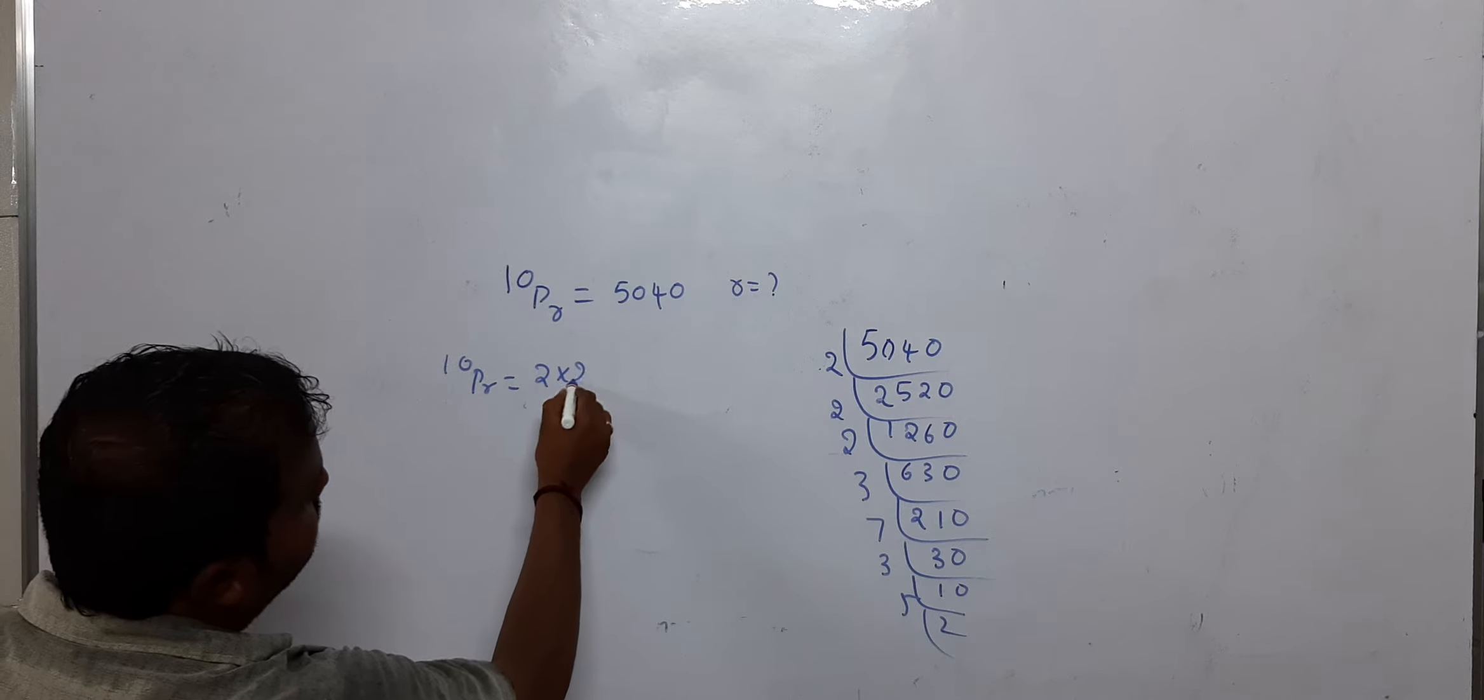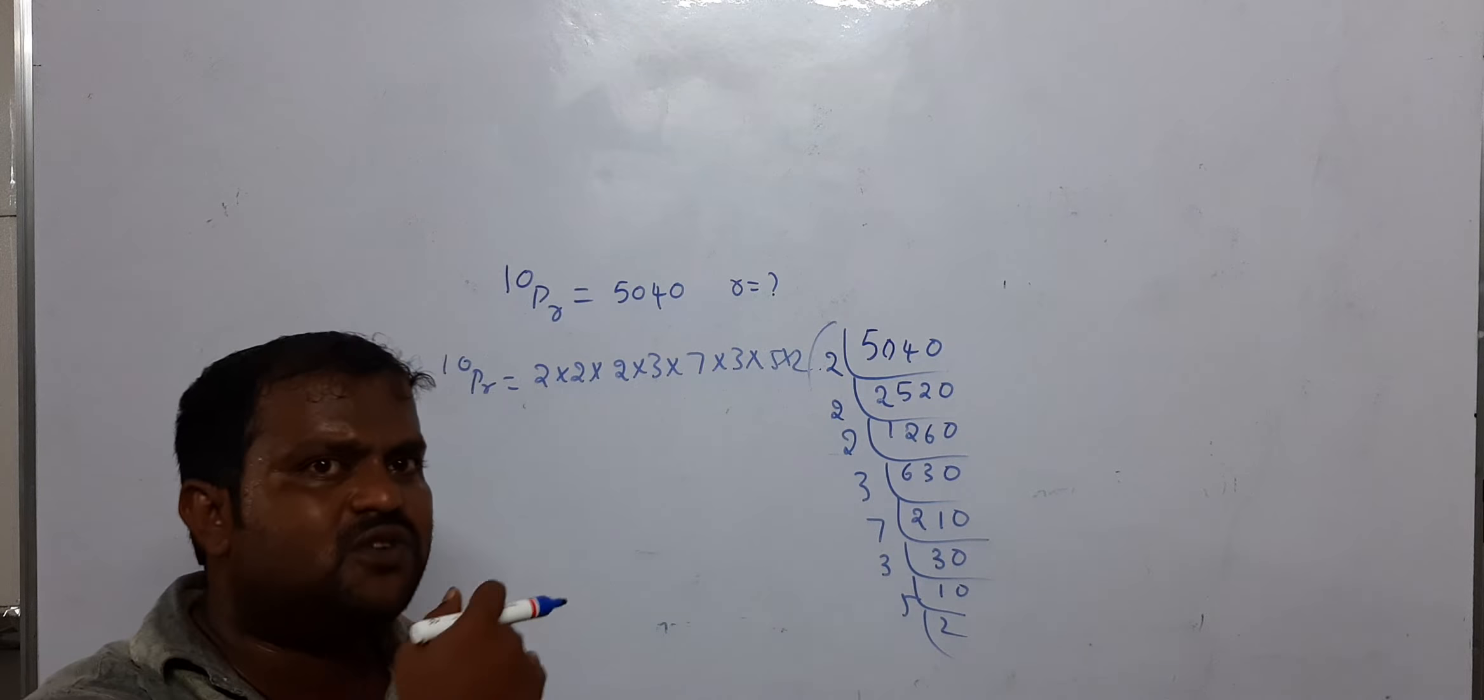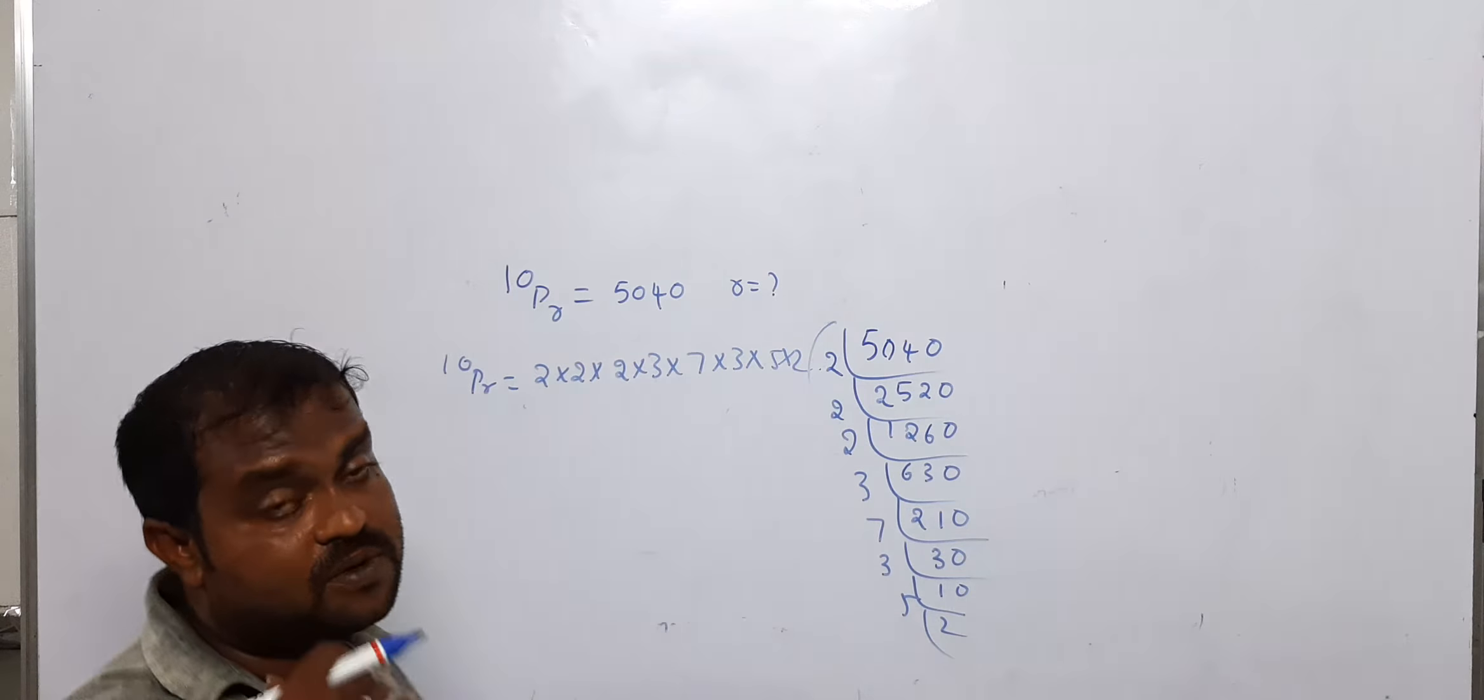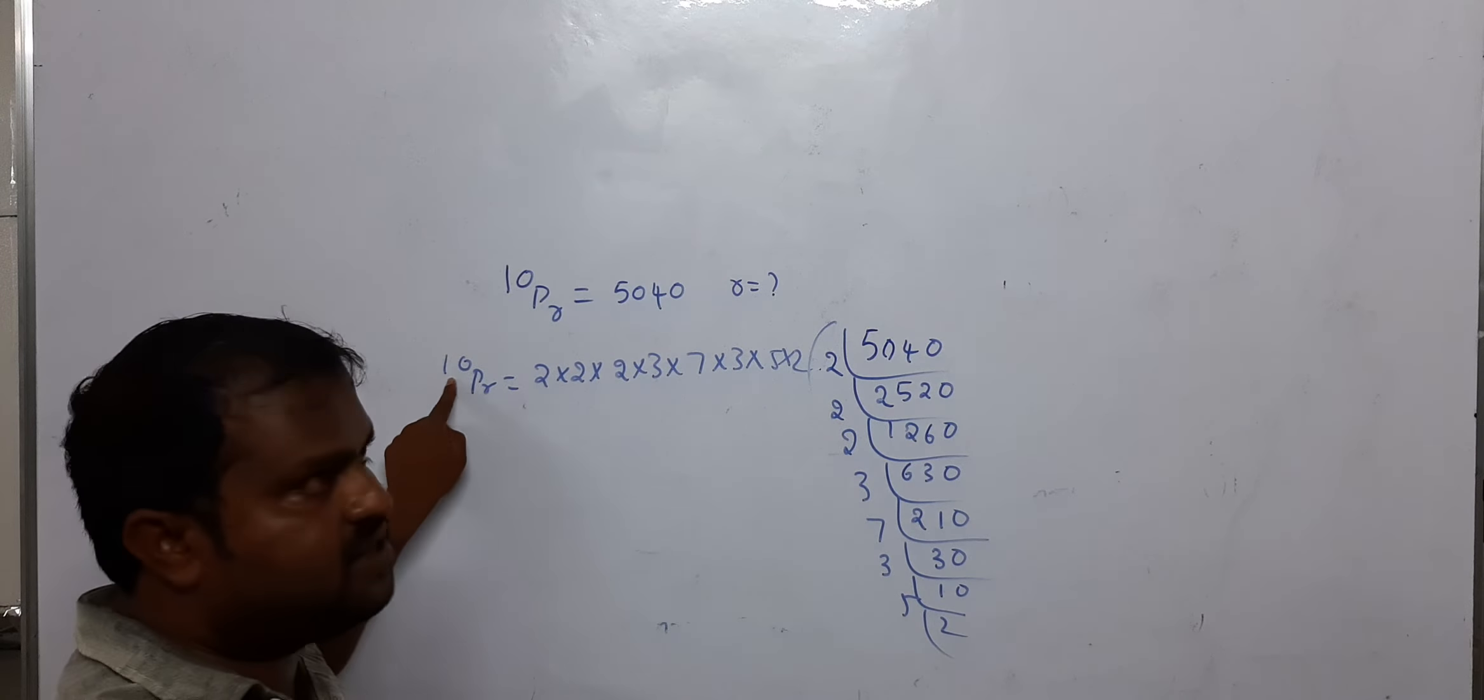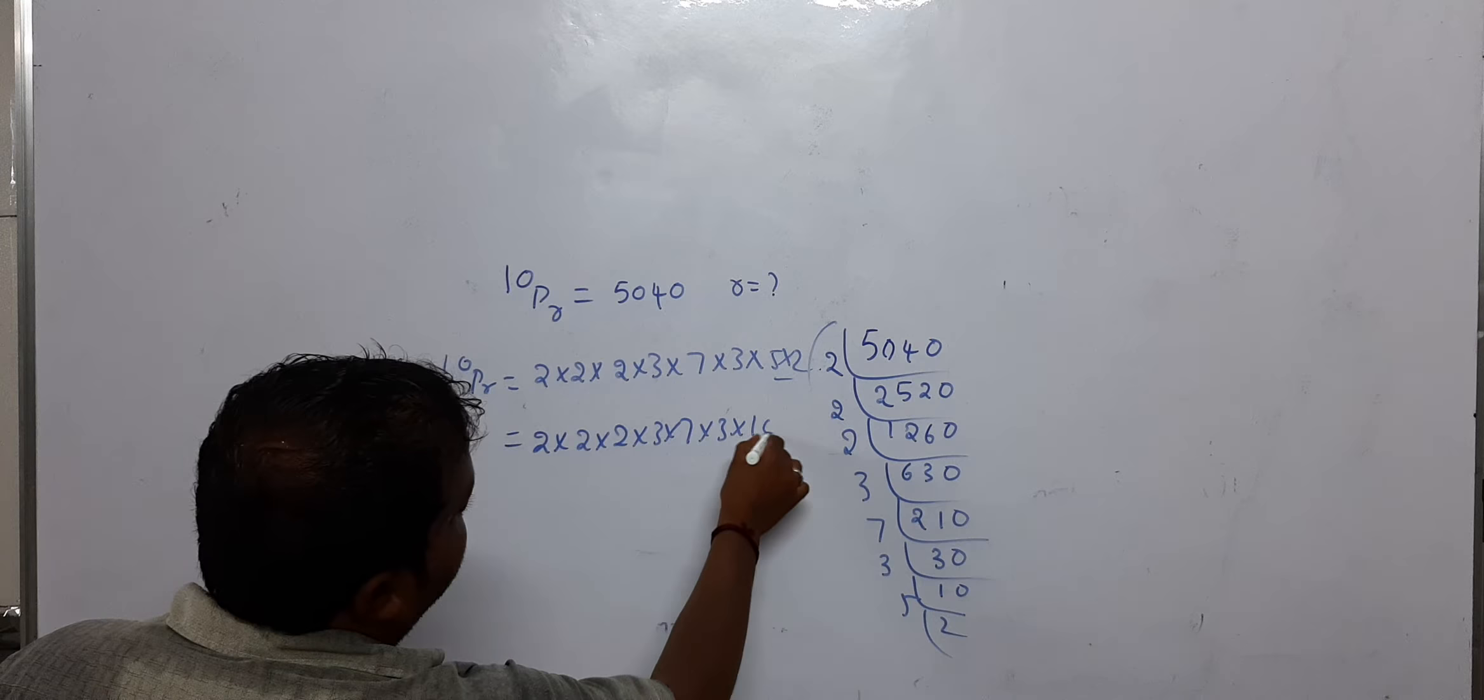Now, the R value we need to find is such that this sequence works. The factorization 2 times 2 times 2 times 2 times 3 times 3 times 5 times 7 represents our permutation. When we write this as 10 times 9 times 8 times 7, we can match these factors.